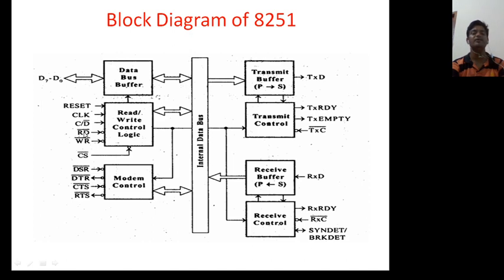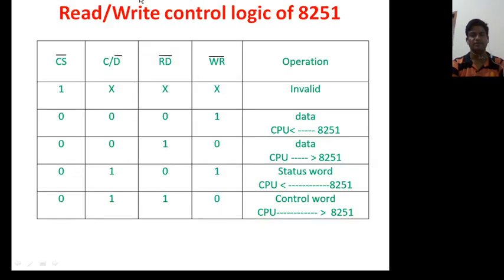And RD bar, if its value is zero, read operation. And WR bar value is zero, then there will be write operation. C/D bar determines whether you are selecting a control word or data. For this, you need to remember this table.